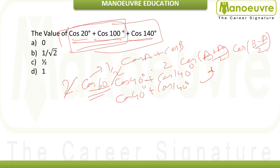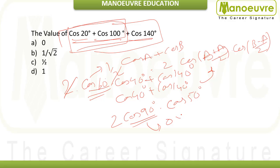We apply the sum and difference formula again to cos 40° + cos 140°. So (140 + 40)/2 = 90°, giving cos 90°. And (140 − 40)/2 = 50°, giving cos 50°. Since cos 90° = 0, zero multiplied by anything is zero. So the final answer is 0.